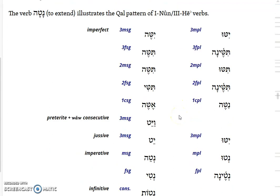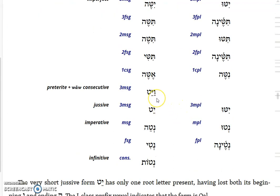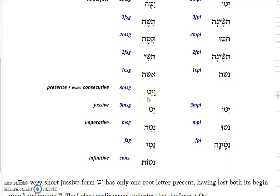When it really gets fun is when you get to the vav consecutive and the jussive, because the nun is assimilated, but the vav consecutive form is a shortened form, as well as the jussive form being a shortened form. So you're going to lose the hey, but you lose the vowel and therefore you lose your gemination - your doubling - and you're going to get vayyitten, or in the jussive, yitten.